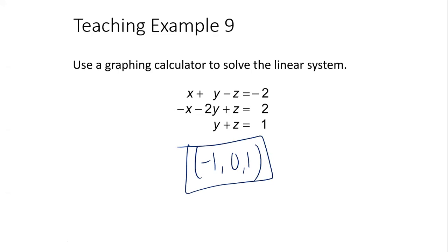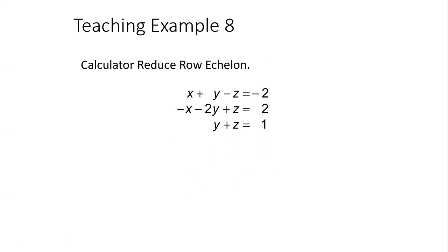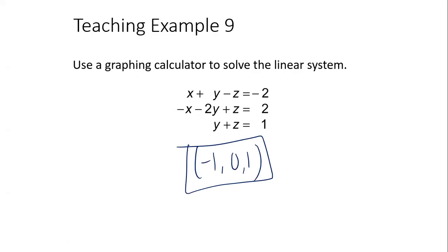Any questions about reduced row echelon form? The solution set here is negative one, zero, and one. Thank you.